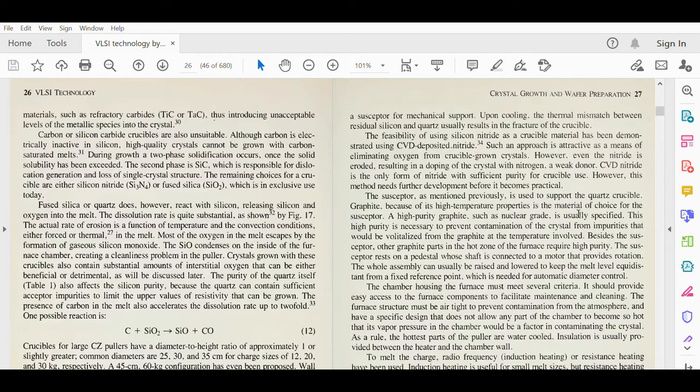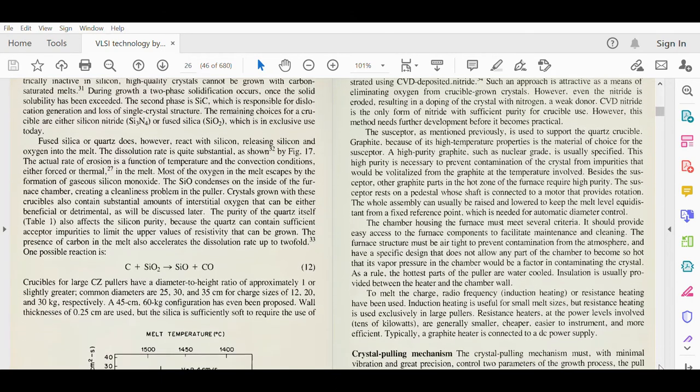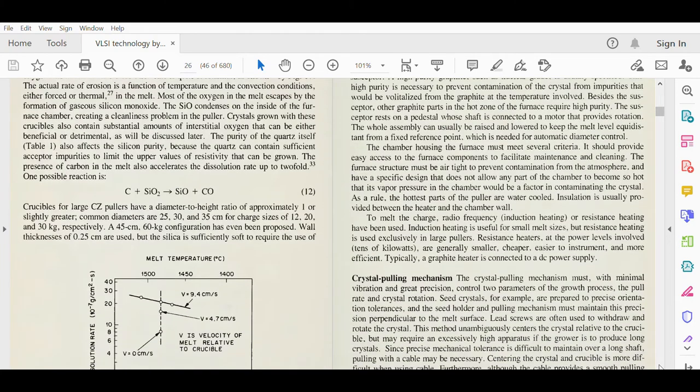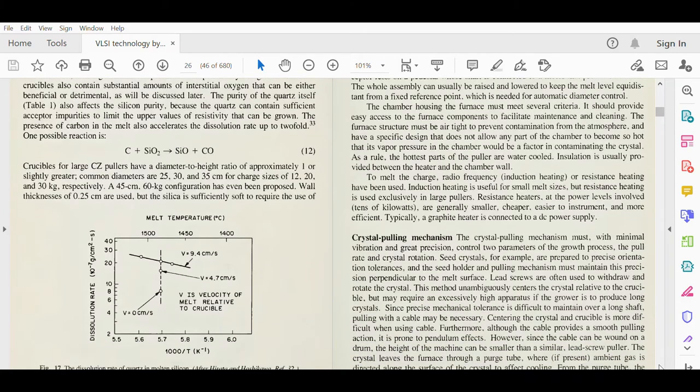High purity graphite, such as nuclear grade, is usually specified. This high purity is necessary to prevent contamination of the crystal from impurities that would be volatilized from the graphite at the temperatures involved. Besides the susceptor, other graphite parts in the hot zone require high purity. The susceptor rests on a pedestal whose shaft is connected to a motor that provides rotation. The whole assembly can be raised and lowered to keep the melt level equidistant from a fixed reference point, which is needed for automatic diameter control. This is important since you are producing crystal for IC technology in a very pure, structured manner with no deformations. The process of IC manufacturing is very expensive, and you do not want any impurity or bug inside because you would have to repeat the entire process.